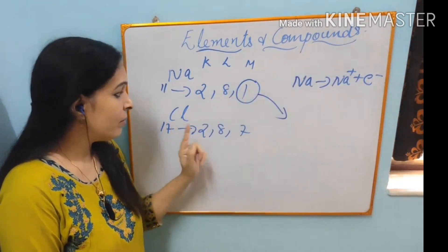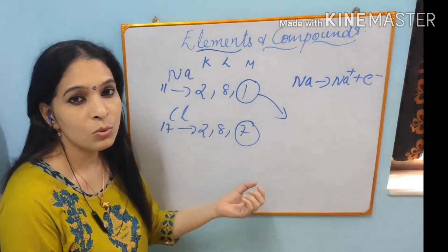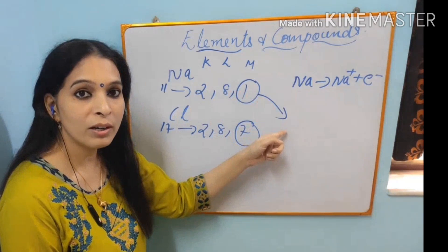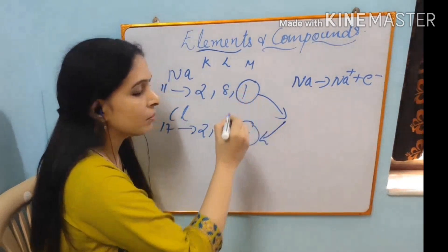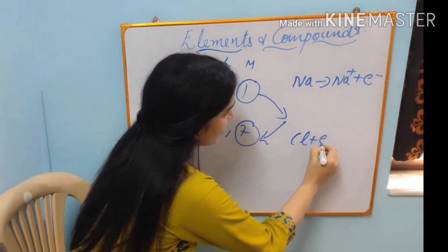Now chlorine. It has 7 electrons in its outermost shell and it is very easy to get 1 more electron. Sodium has already given out 1 electron. That 1 electron will be accepted by chlorine, and chlorine will become Cl-.